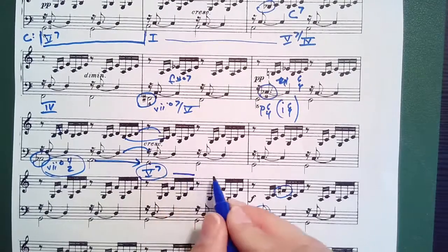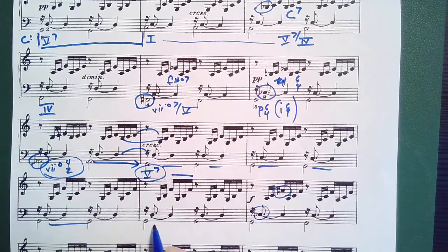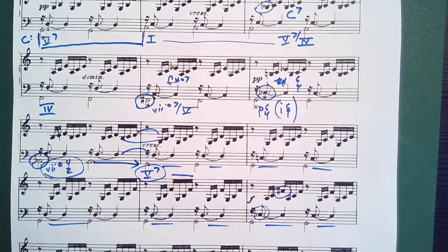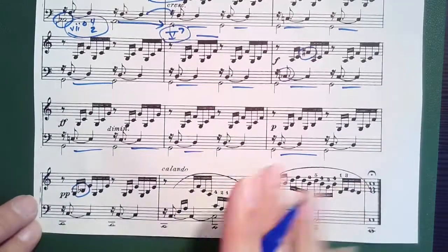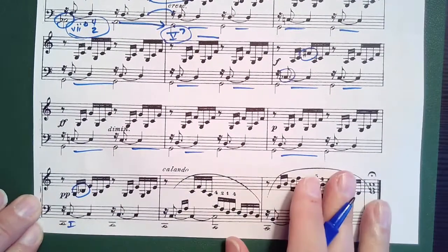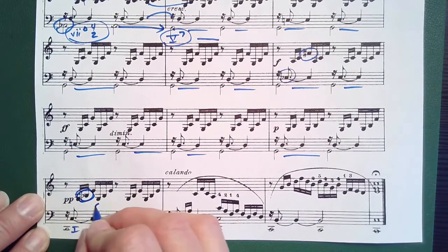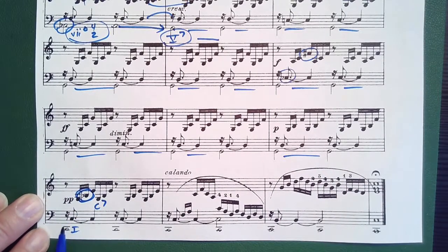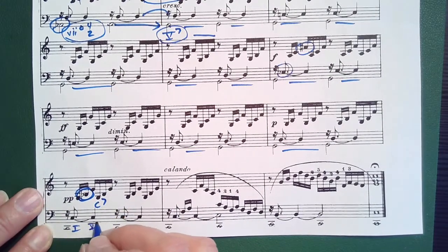Then above this V7, this sustains now for a very long time and finally resolves to one down here. But there's a little wrench thrown in, making it a C7, that this one tonicizes four. So this one becomes five seven of four.